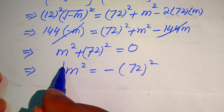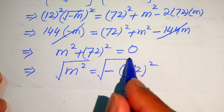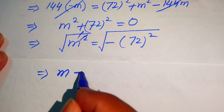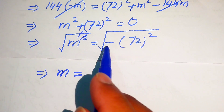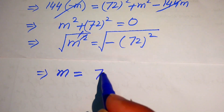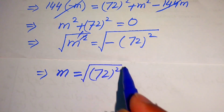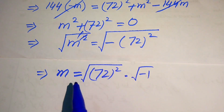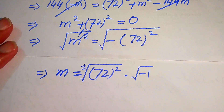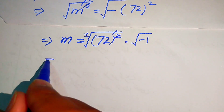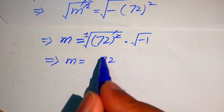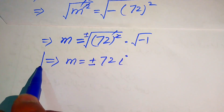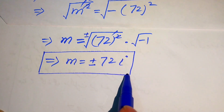To find the value of m we take the square root on both sides. The square and square root cancel on the left, giving m equals to the square root of minus 72 squared. We separate this as square root of 72 squared times square root of minus 1. Taking plus or minus, we get m equals to plus or minus 72 times square root of minus 1. Since square root of minus 1 equals iota, the final values of m are m equals plus or minus 72i. Thank you so much for watching this video.